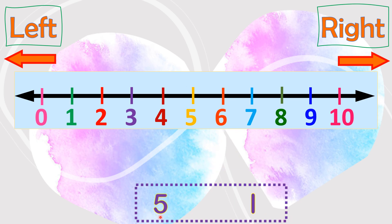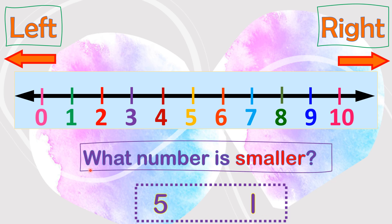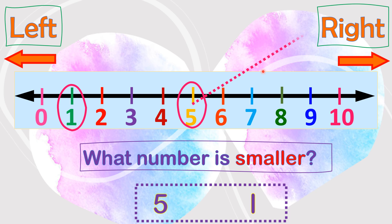Let's take the same example, 5 and 1. But this time, we'll see what number is smaller. So first, let's circle 5 and 1. 5 is at the right side, and 1 is at the left side. We say that numbers at the left side are smaller. Therefore, 1 is the smaller number.